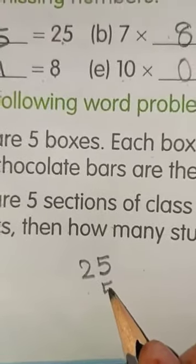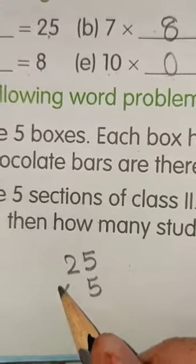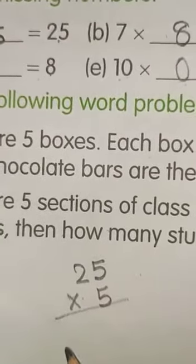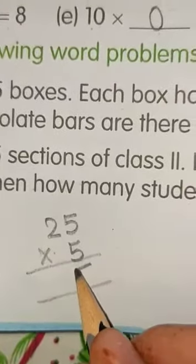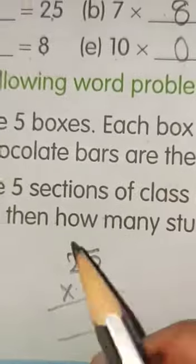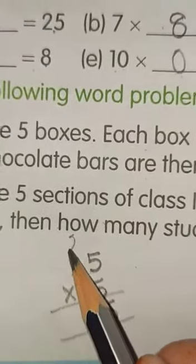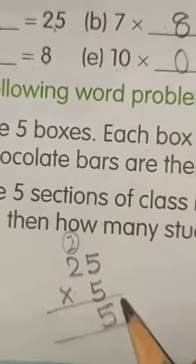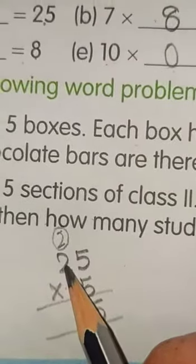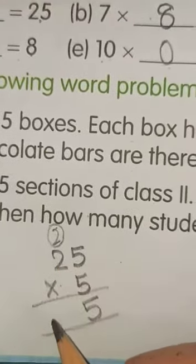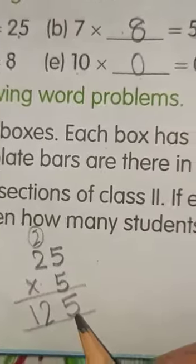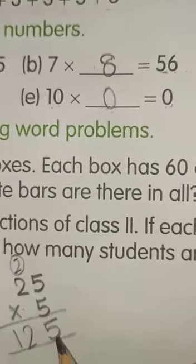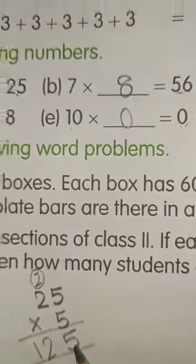5 fives are 25. Write 5 here. And 2 as carry to the 10's place. 5 twos are 10. 10 plus 2 is 12. So, there are 125 students in class 2.